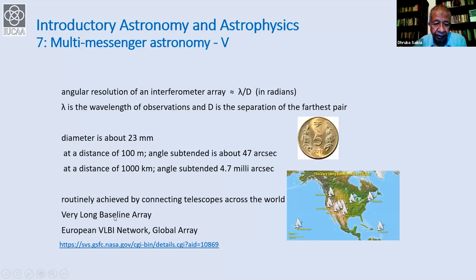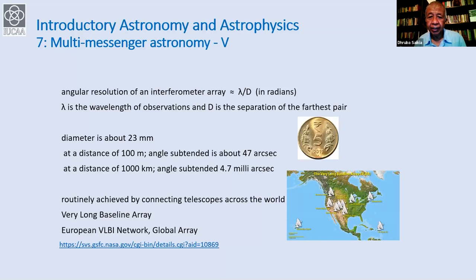To illustrate the angular resolutions involved: a five-rupee coin of about 23 mm diameter at 100 meters subtends about 47 arc seconds — near the resolution of the human eye. At 1000 kilometers it subtends about 4.7 milli-arc seconds. Modern telescopes like the VLBA achieve milli-arc second resolutions. The Event Horizon Telescope used millimeter-wave telescopes at the furthest possible separations, including one in the South Pole, to achieve tens of micro-arc second resolution — enabling the famous image of the M87 black hole.